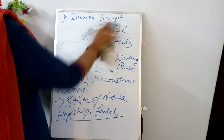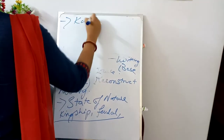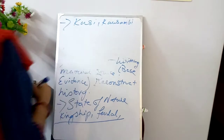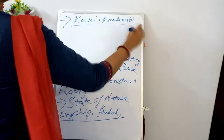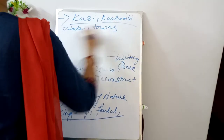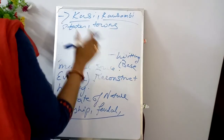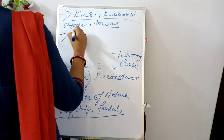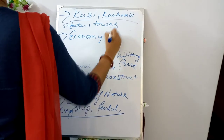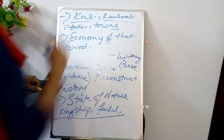Whether it was a kingship form of rule or a feudal system of government — different types of the nature of the state are evidenced from written historical material. We also find many names of states and governments that existed, such as Kasi and Kosambi. Names of states and towns are all evidences obtained from the material sources of history.